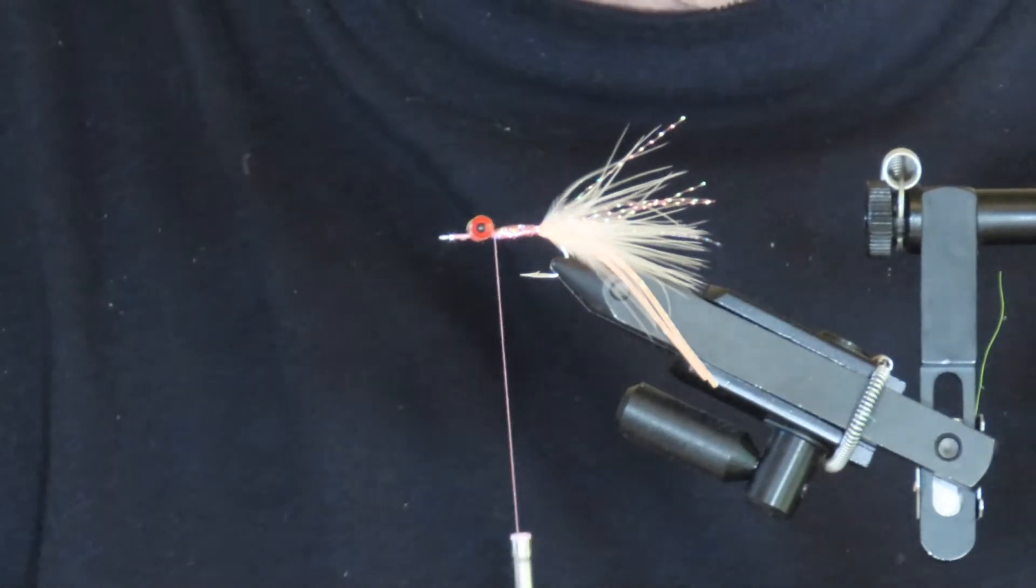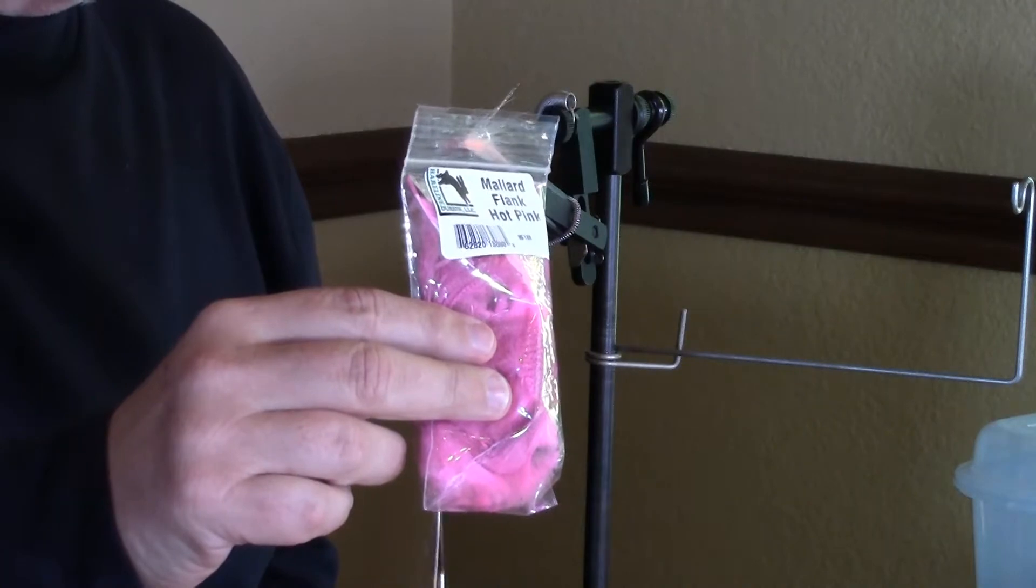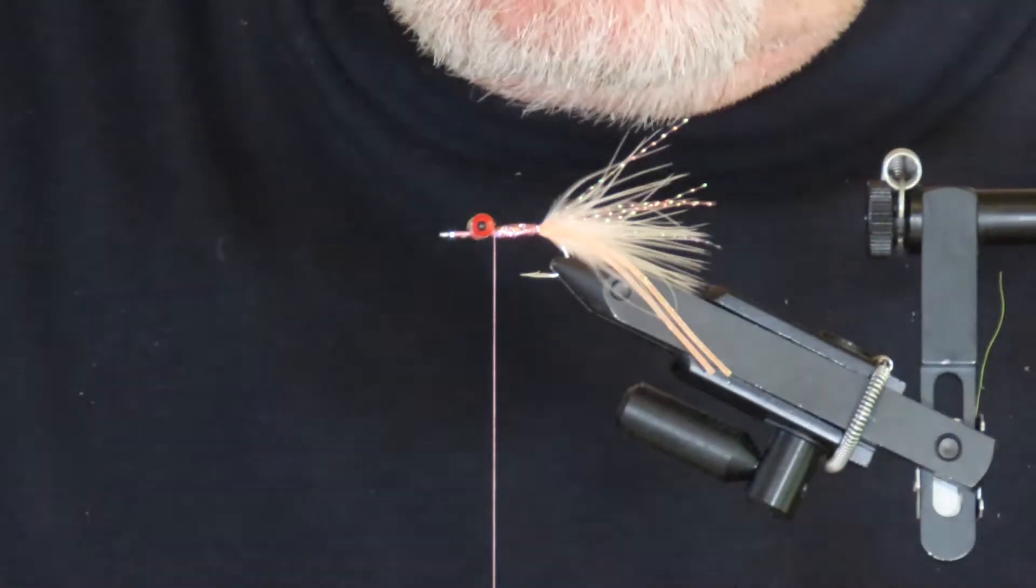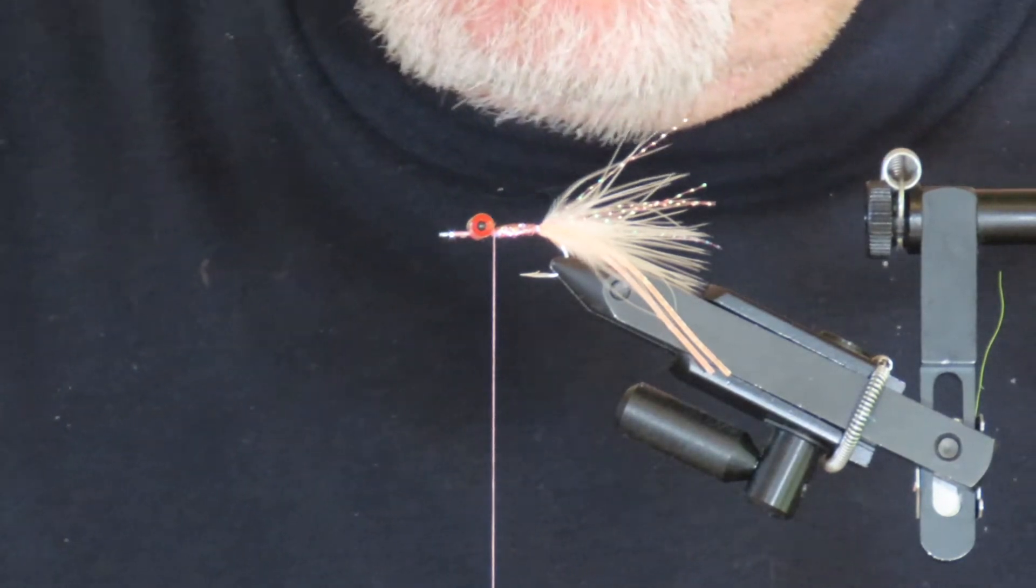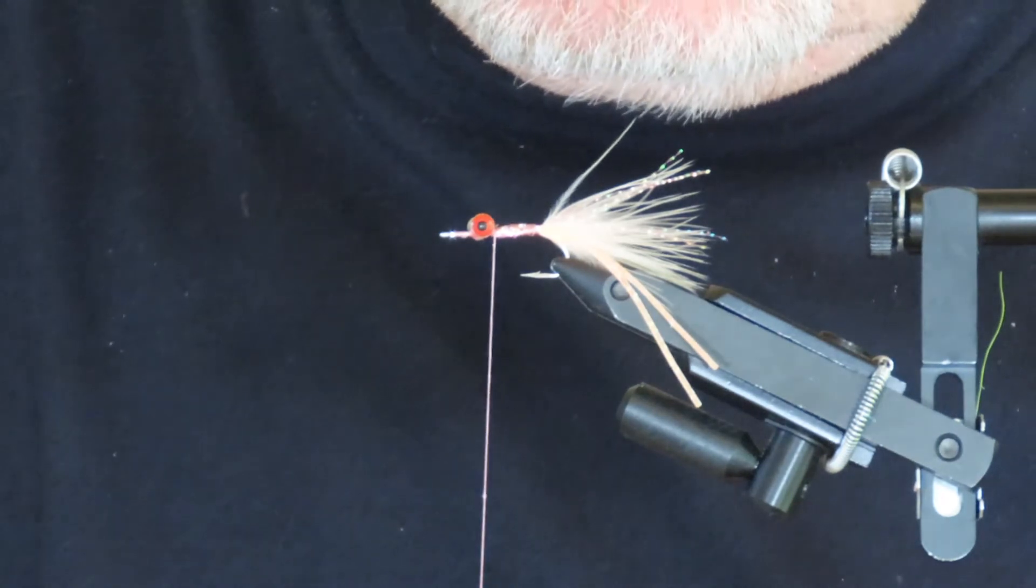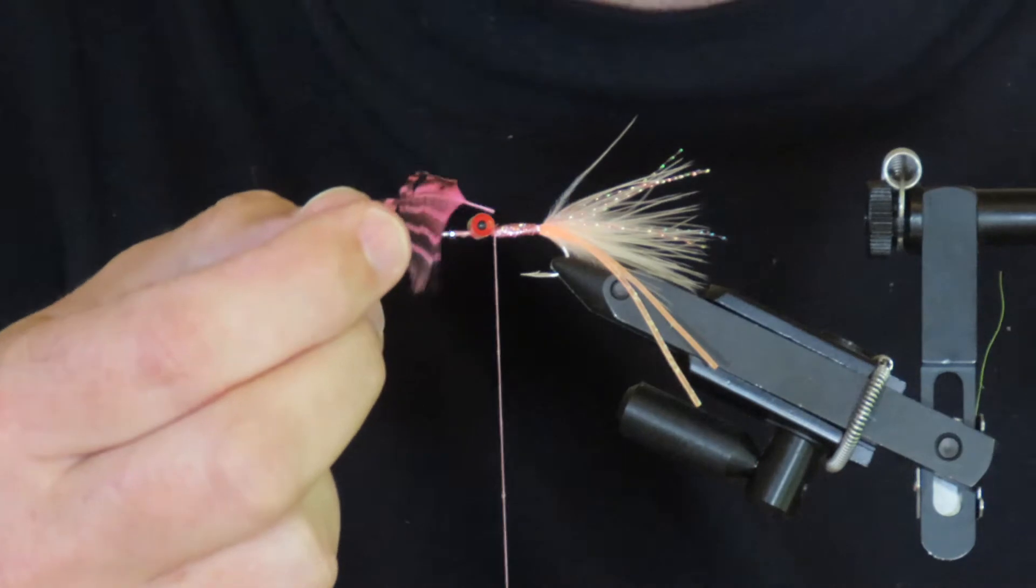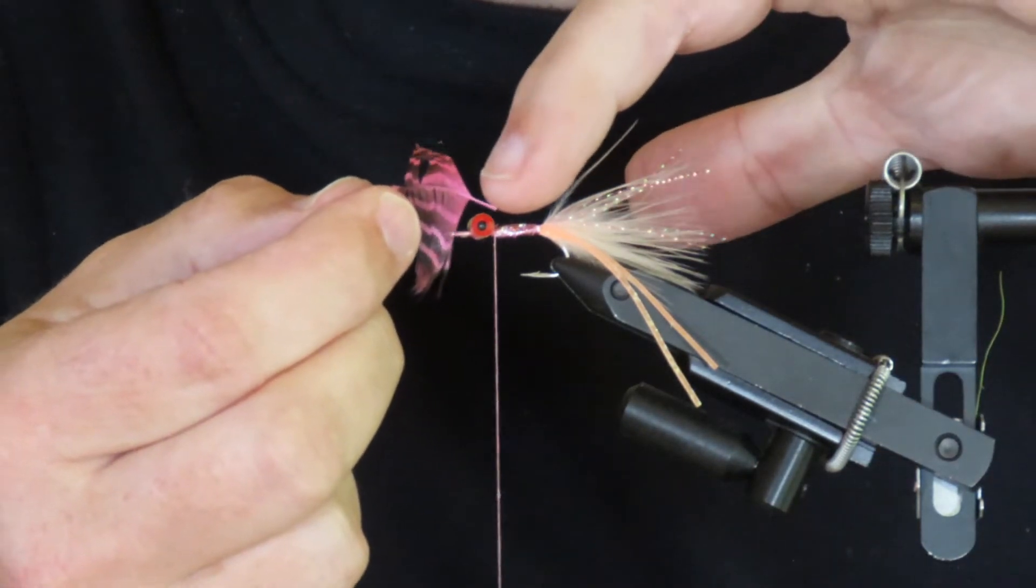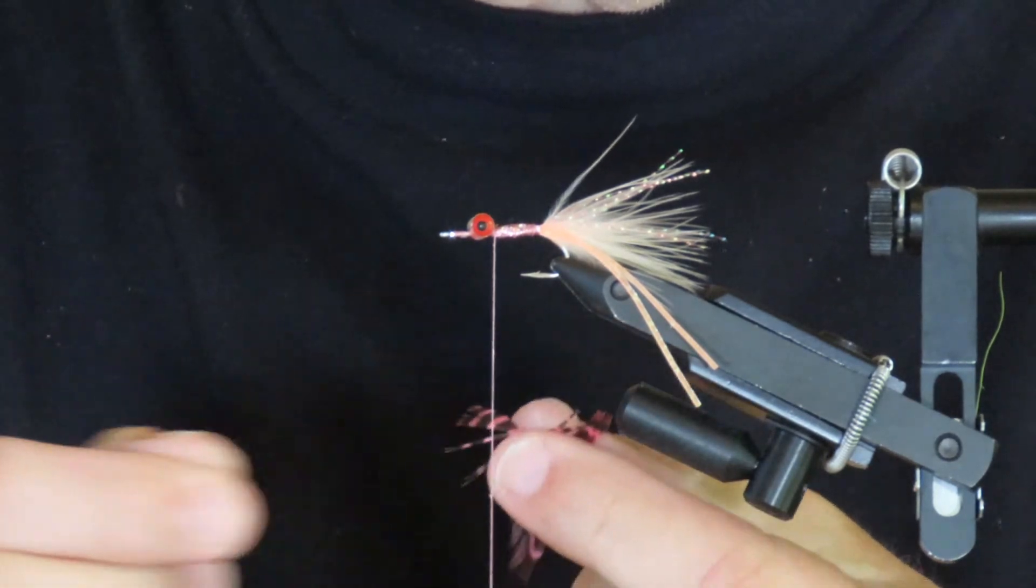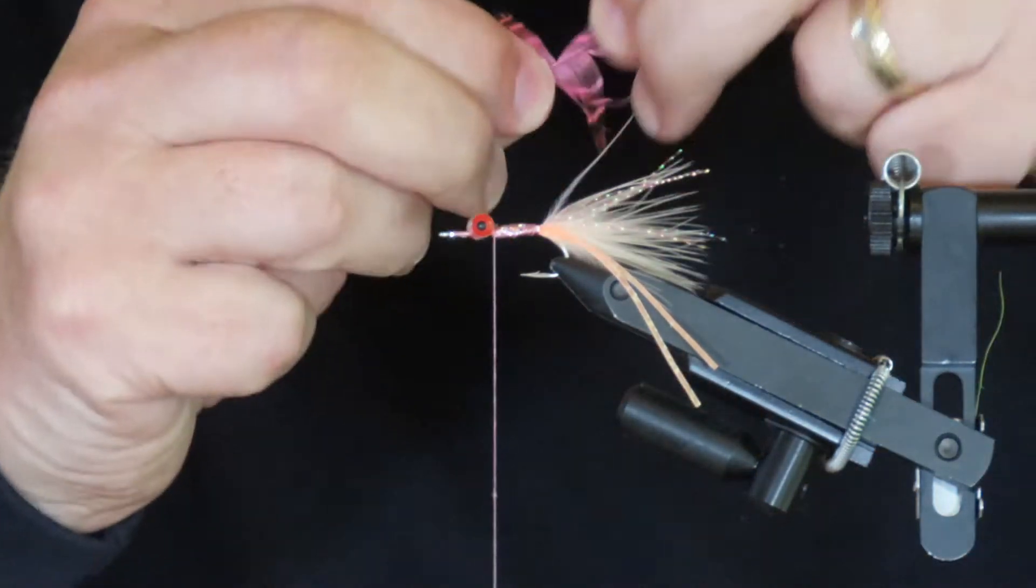Now it's time to add a little collar of mallard flank in hot pink. Unfortunately, I've used most of the good feathers in this package, so I'm left with slim pickings. This isn't the best flank feather, but it's going to have to do. I've trimmed the stem to about a quarter of an inch, and I'm going to tie in the feather by the stem with the shiny side towards me.